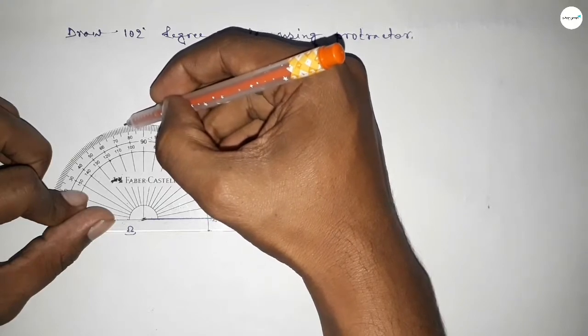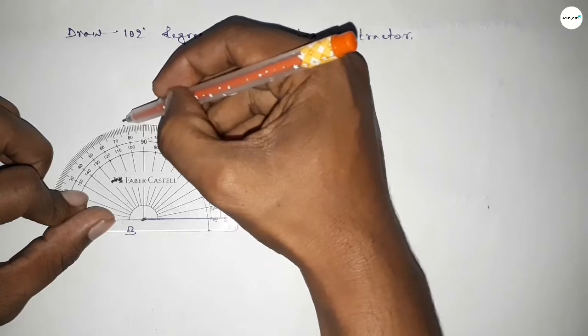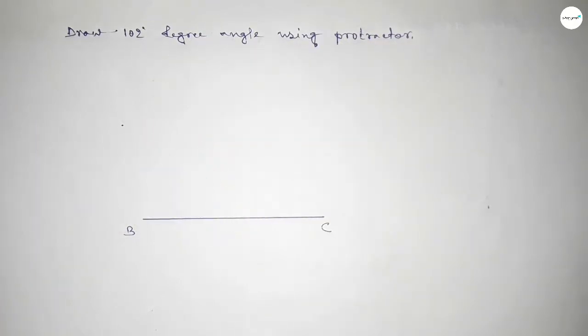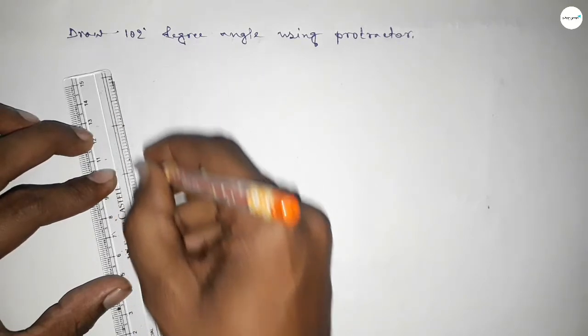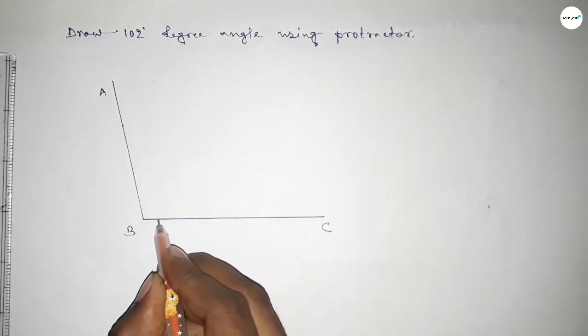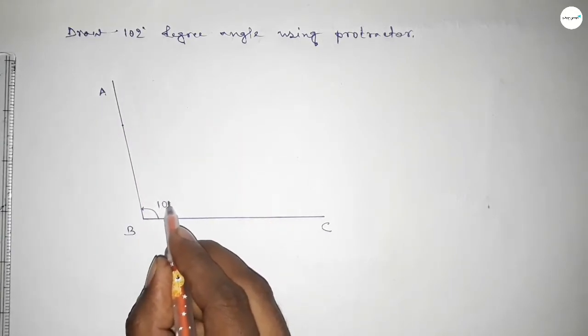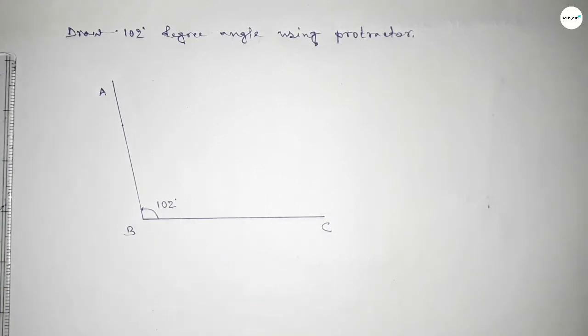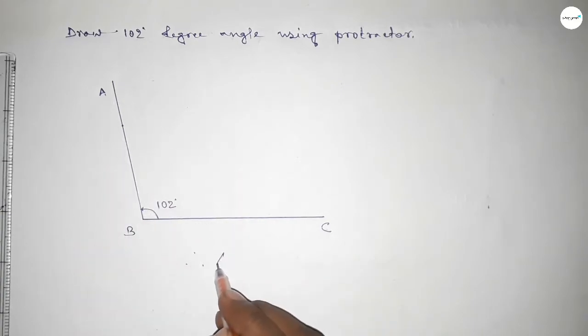Now joining in this side to get 102 degree angle and taking here point A. So angle ABC, up to this, this is 102 degree angle. Therefore, angle ABC up to this, so angle ABC equal to 102 degree angle.